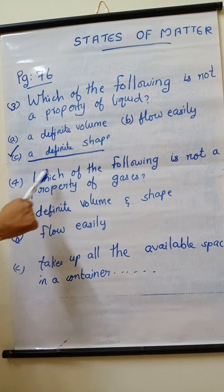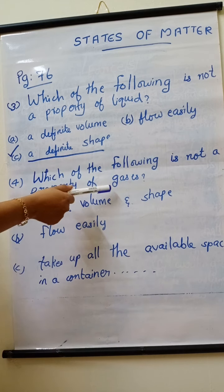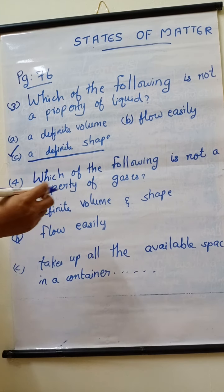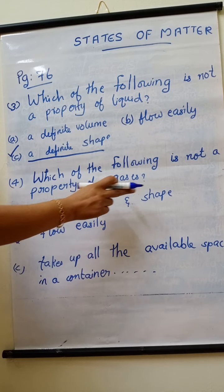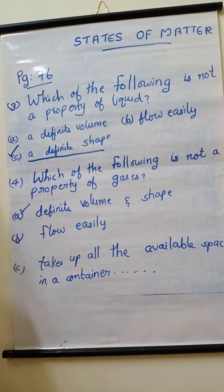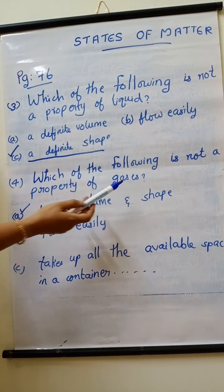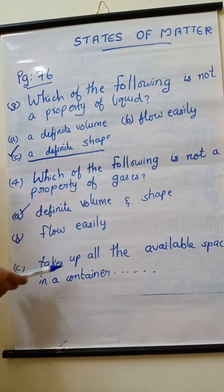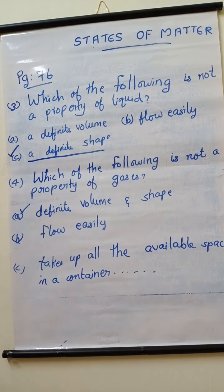Fourth question is, which of the following is not a property of gases? We know that gases do not have definite volume and shape, so that is not a property of gases. Gases will flow easily, they take up all the available space in a container, and we cannot see them. So option A is the correct answer.